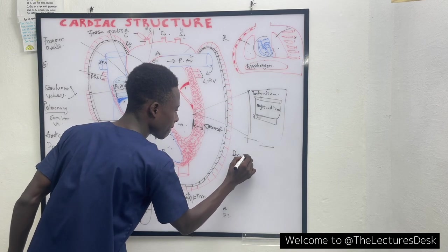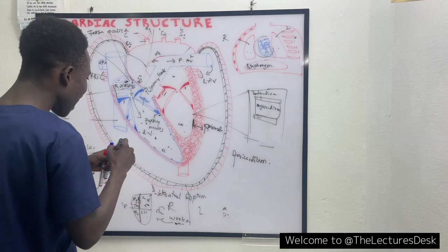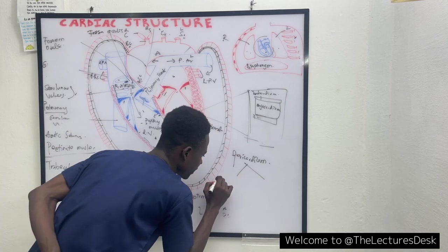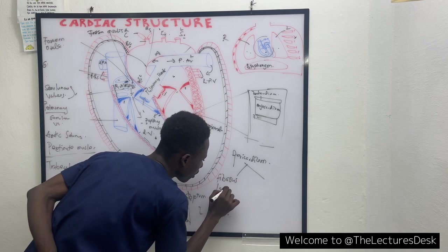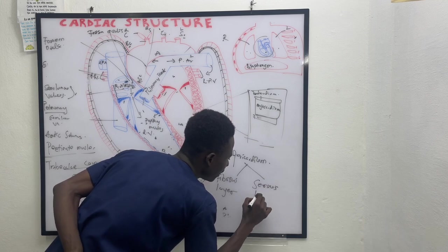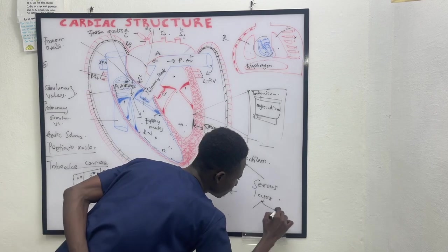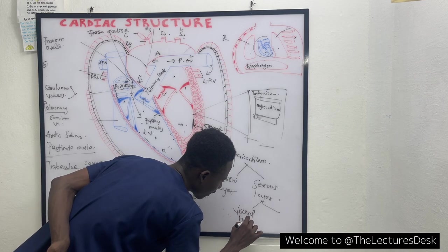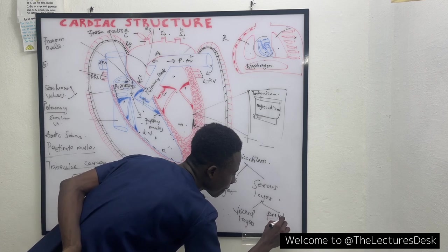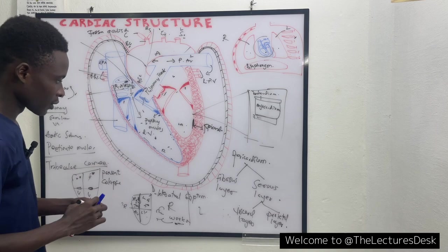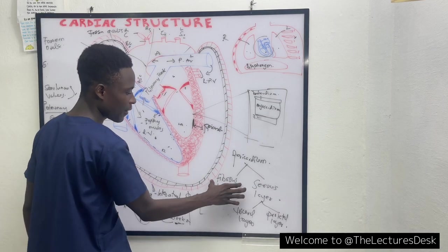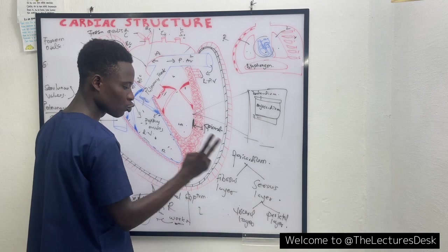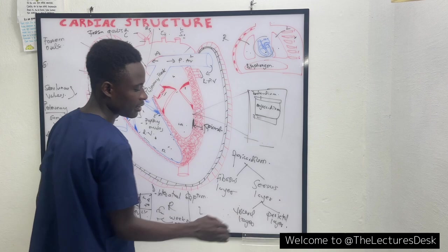The heart is embedded in the pericardium. The pericardium has two main layers: the fibrous layer and the serous layer. The serous layer also has two main layers — the visceral layer and the parietal layer. The fibrous layer is the outermost layer and the serous layer is the innermost layer. Within the serous layer, the visceral and parietal layers are found.